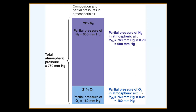The same thing applies to gases. In the atmosphere, atmospheric pressure is approximately 760 mmHg. The biggest portion is nitrogen, about 80%. If you multiply 80% by 760, it gives you the partial pressure for nitrogen — described as PN2 — which is approximately 600 mmHg. Similarly, oxygen has approximately 20% of the air, and 20% of 760 gives a partial pressure for oxygen of approximately 160 mmHg.